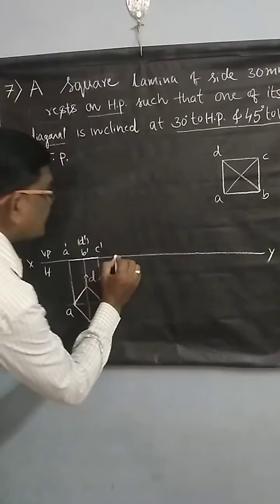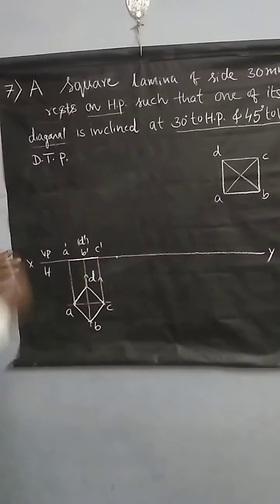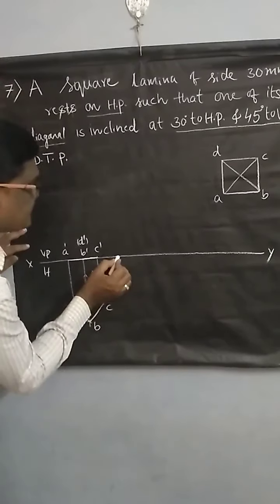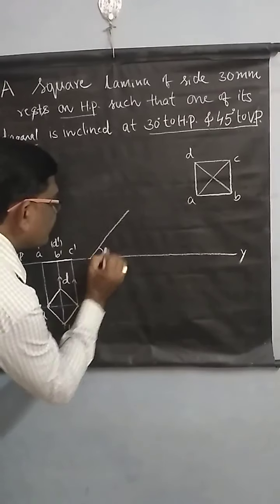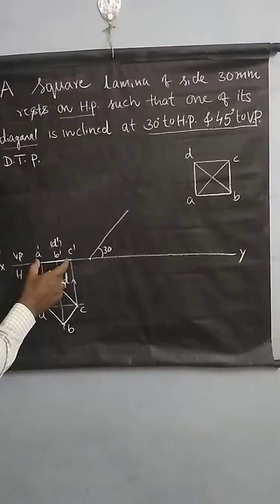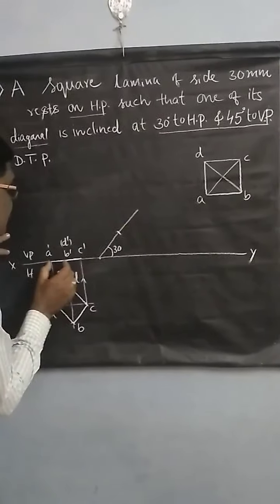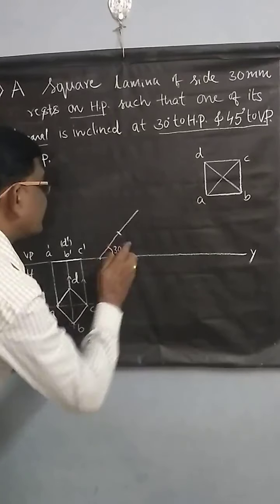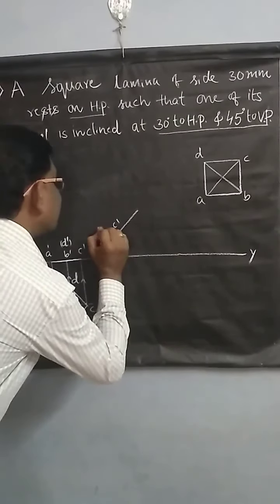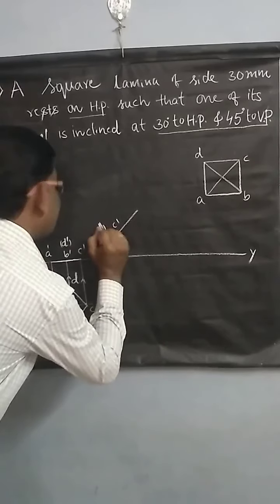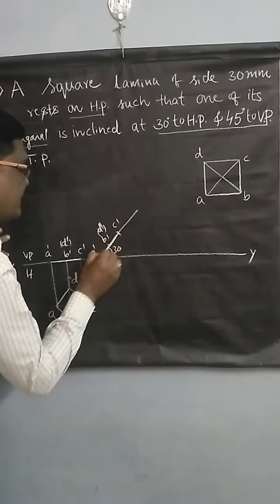In the second step, you mark a point at the side of the corner. You take the angle given with respect to HP — it is 30 degrees — and draw a 30 degree line. You transfer this line here as it is, then transfer the points. You write C dash, B dash, inside D dash, and A dash. Then make the front view line dark.